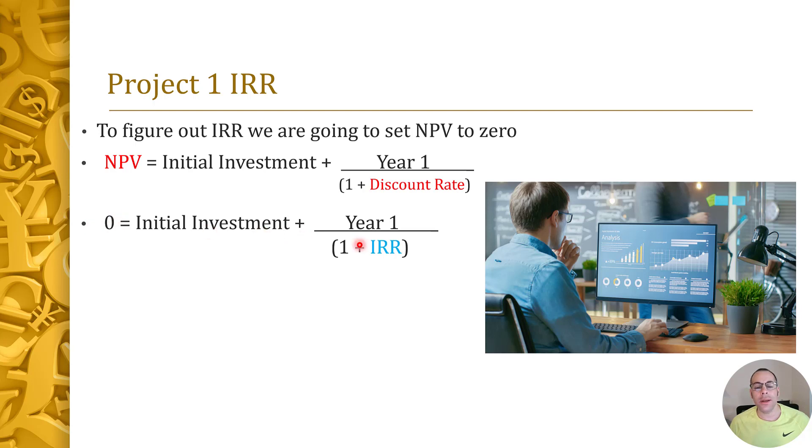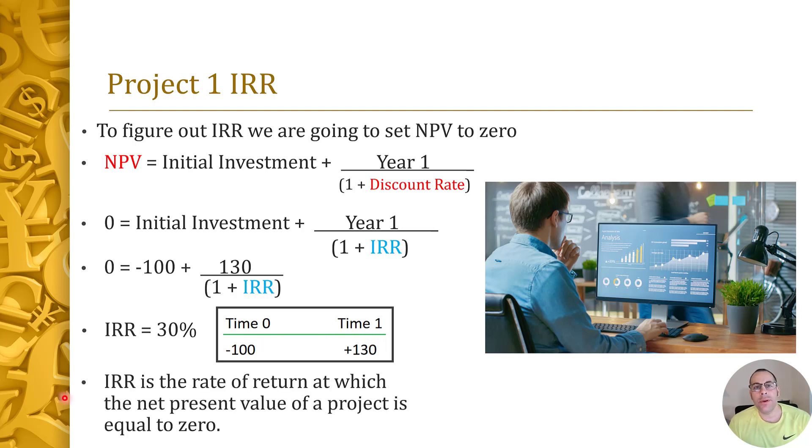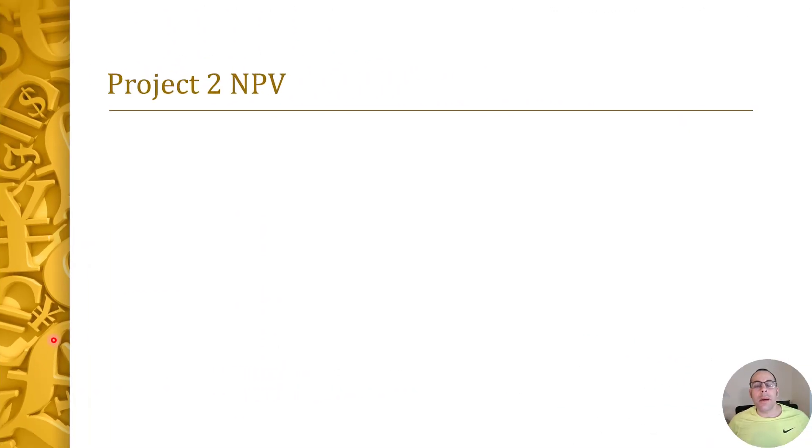We plug in the numbers we know. Our investment is $100, so it's a negative, it's a cash outflow. We receive $130 at the end of year one over one plus IRR. Now we have to do a bit of algebra, and when we solve for the internal rate of return, we get 30 percent, which makes sense because it's a one-year project and the project gave us a 30% return. We put $100 into the project and got 130. If you wanted to explain internal rate of return in one sentence to somebody, you would say it's the rate of return at which the net present value of a project is equal to zero.